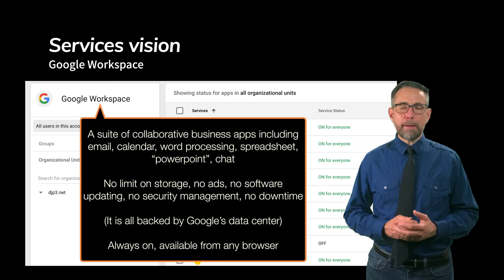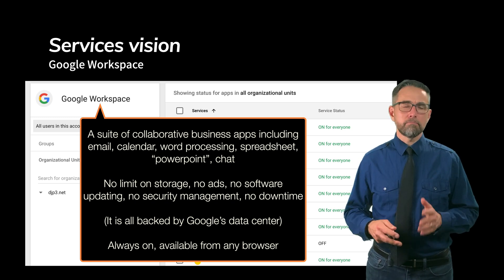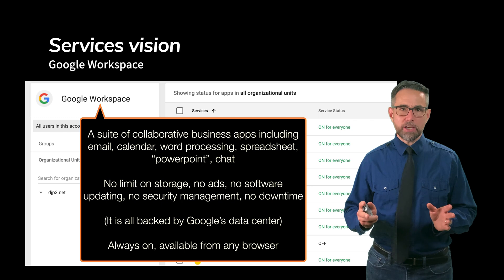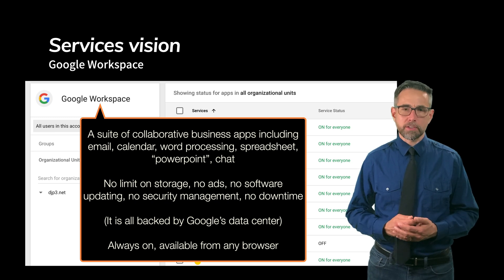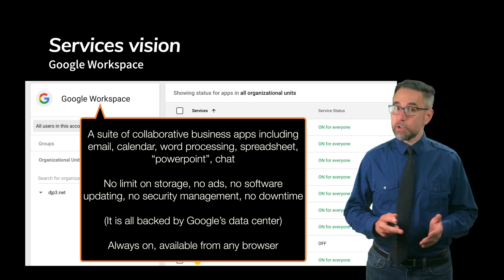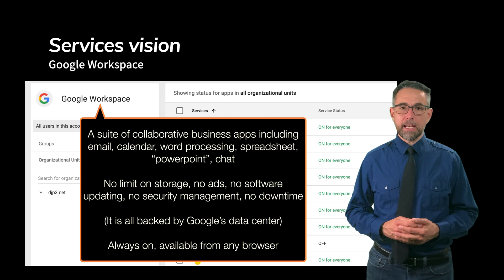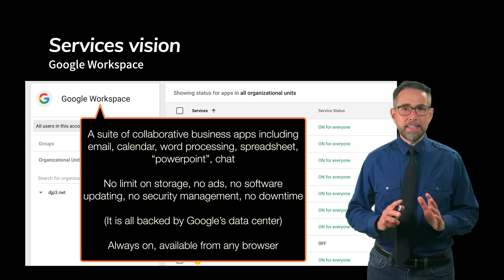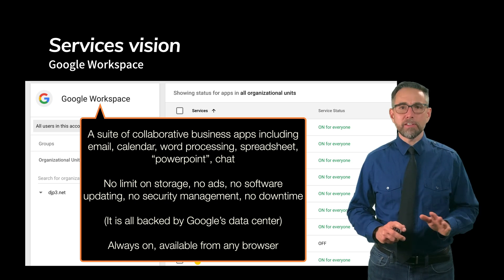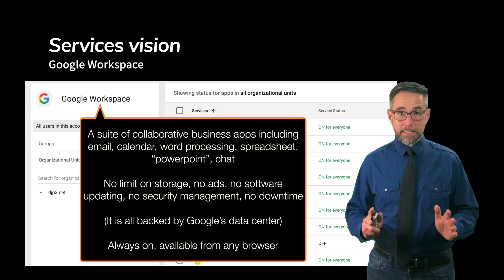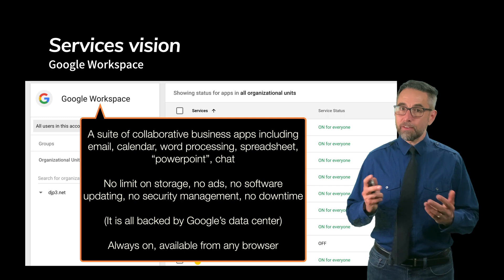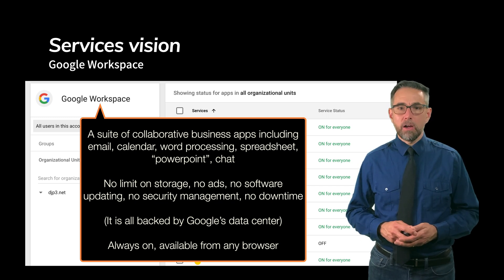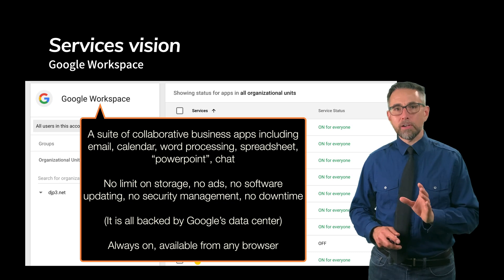It's a suite of collaborative business apps all run through your browser — email, calendar, word processing, spreadsheet, PowerPoint, chat, etc. You know you're using a cloud service because if you're not online, you're going to have trouble getting access to those resources. Nevertheless, there doesn't appear to be any significant limit on storage, there's no ads, no software updating, no security management, and there's rarely any downtime — because all of those heavily engineering-focused tasks have been taken care of for you by cloud computing engineers. All of these services, the software included, are backed by Google's data center — always on and accessible as long as you've got a browser.